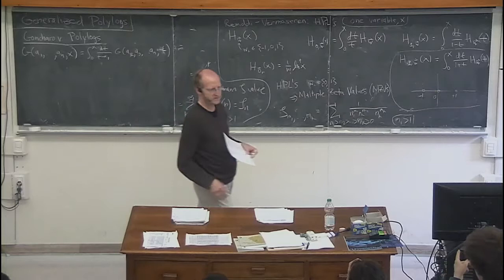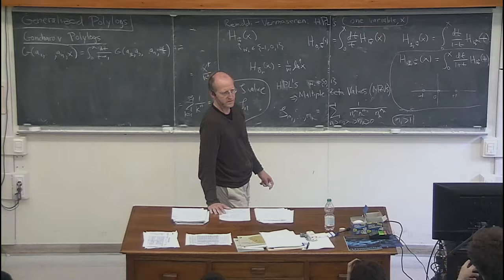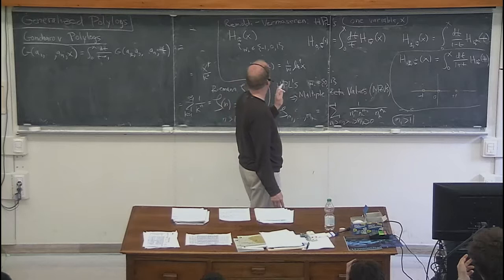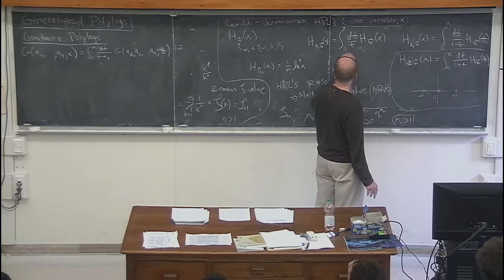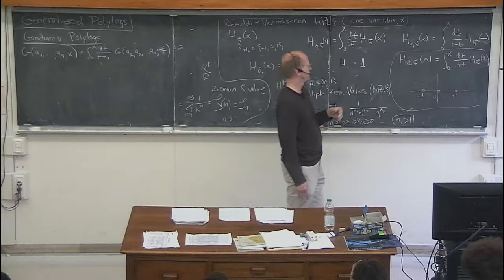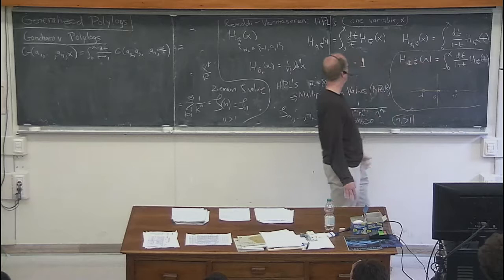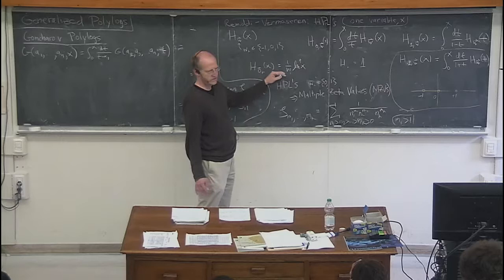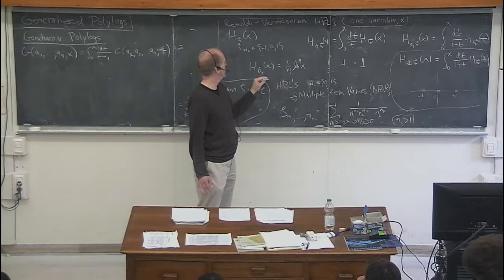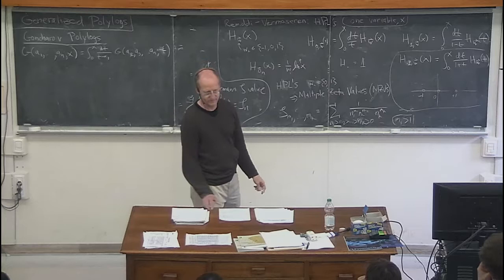H with no indices equals 1, and you start the recursion from there. So H_1 is minus log(1 minus x), H_{minus 1} is log(1 plus x), and for sequences of all zeros you use the special case 1 over n-factorial times log^n(x). These functions form a complete set of things branched in a certain way over specific points. All these kinds of functions satisfy a huge number of identities which can be very complicated.